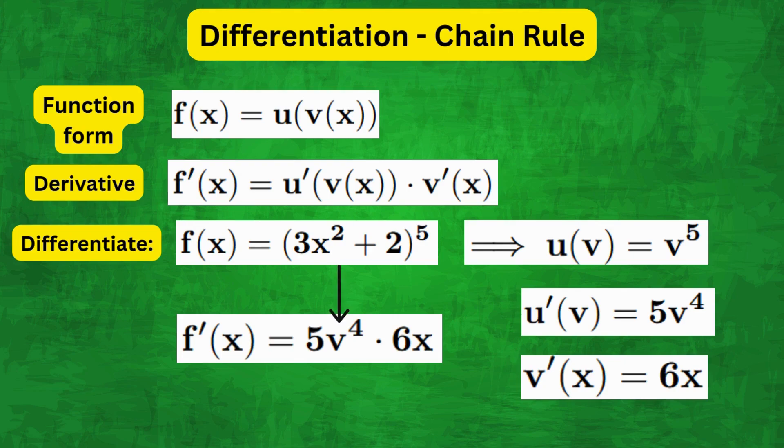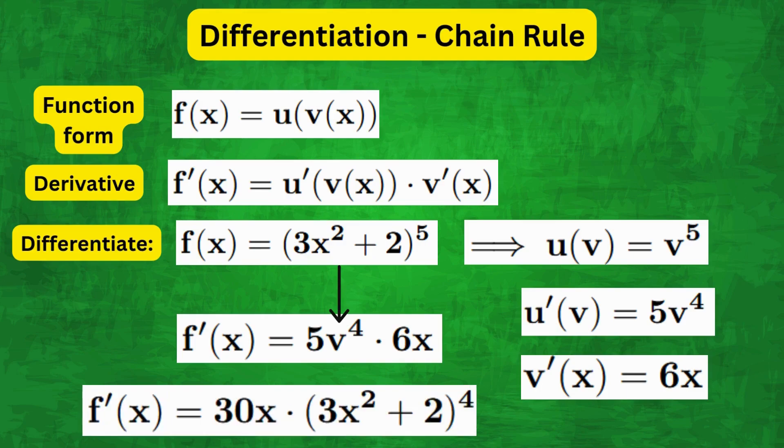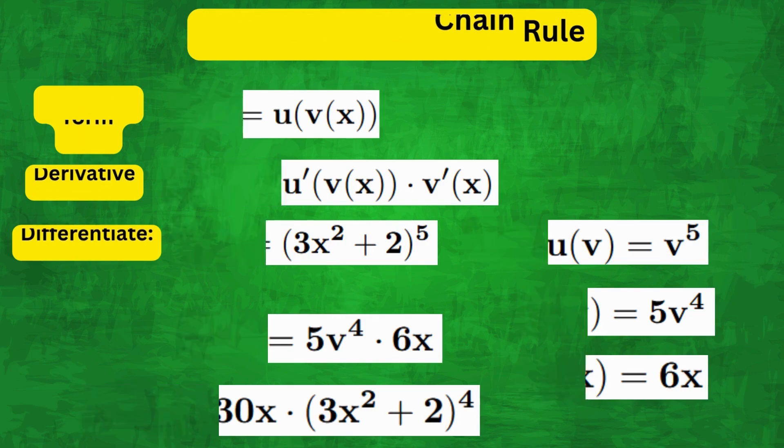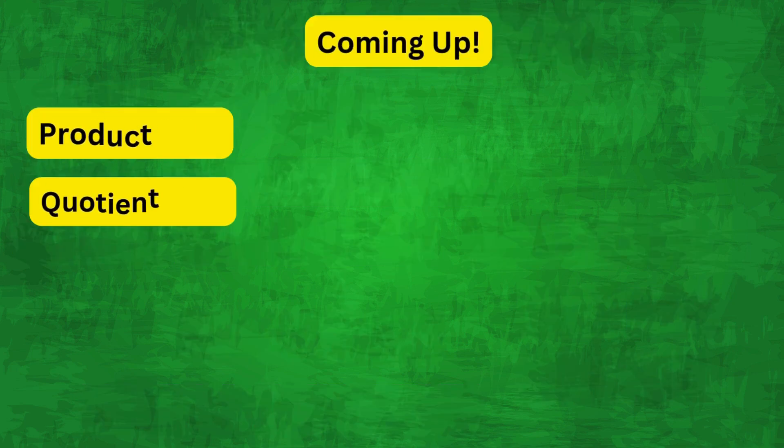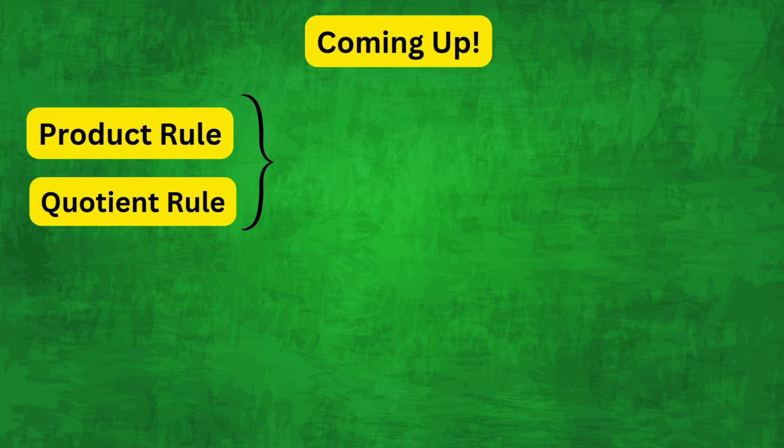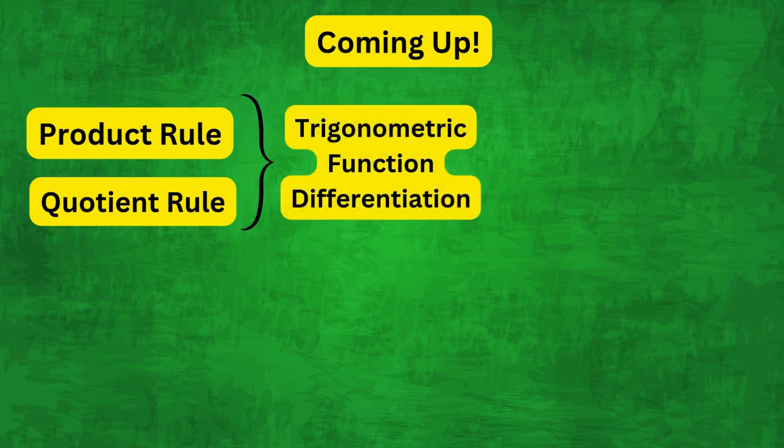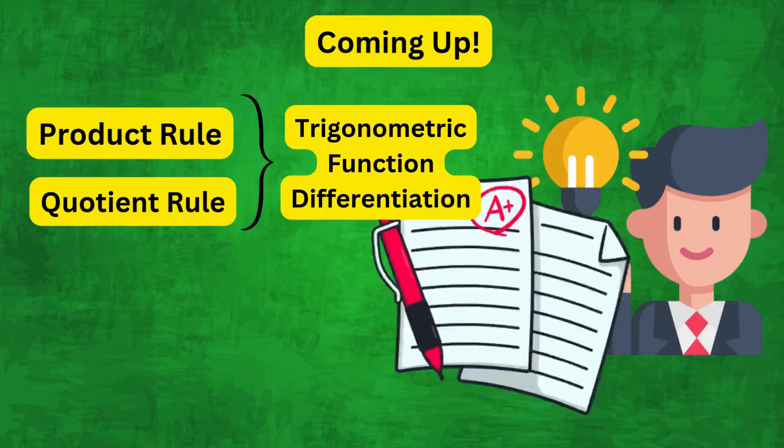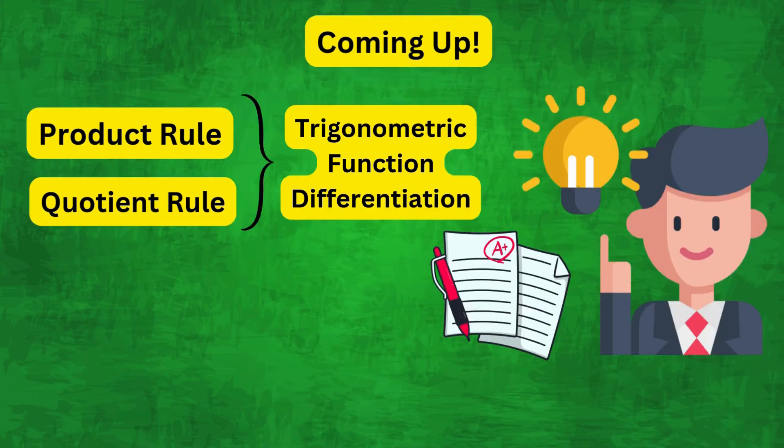And replacing v with 3x² + 2, we get f'(x) equals 30x(3x² + 2)^4. Now we will quickly discuss the product rule and quotient rule, and then we will differentiate the same trig function with both these rules so you can compare and better understand each method. If you're enjoying the video so far, then please support the channel by liking and subscribing.